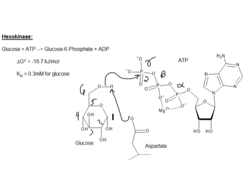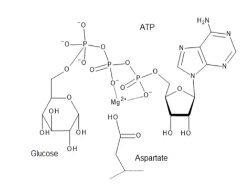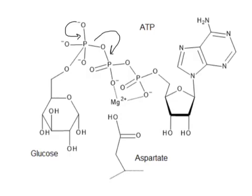We now have a protonated aspartic acid, and we've linked the glucose and ATP together momentarily. Zooming in, we can see we've made a pentavalent phosphorus with five bonds. P double bond O's, just like C double bond O's, want to be reformed, so the next step is to collapse our double bond and clip off the ADP piece, breaking the bond between the gamma phosphate and the beta phosphate.